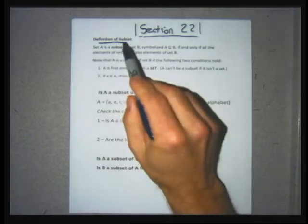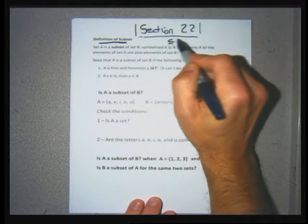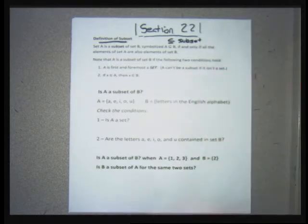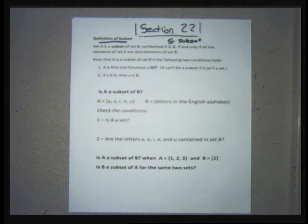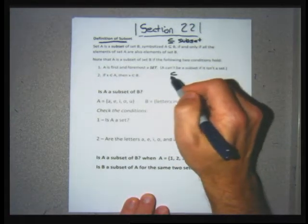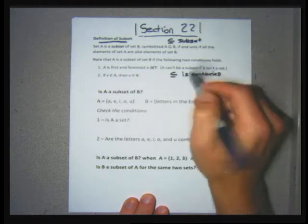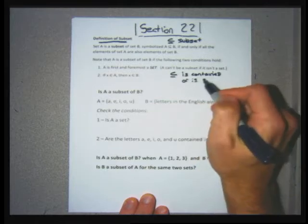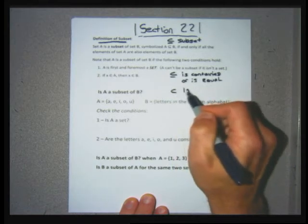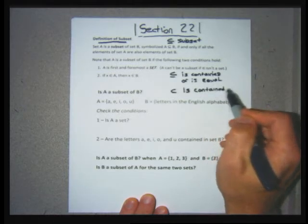The word we need to know is 'subset.' We say a set A is a subset of a set B — I call this the subset symbol. For A to be a subset of B, A is contained in or equal to B. If I take the line out from under the symbol, we call that a proper subset symbol, which means A is contained in B but is not equal.